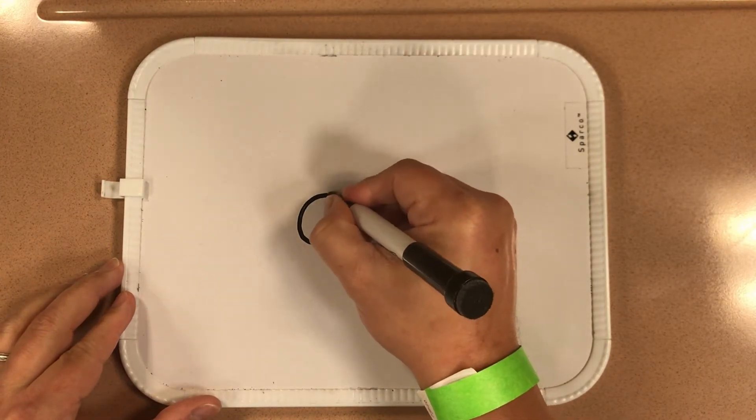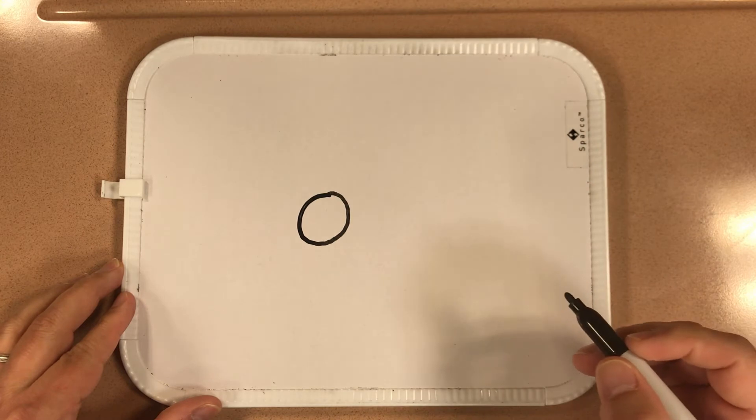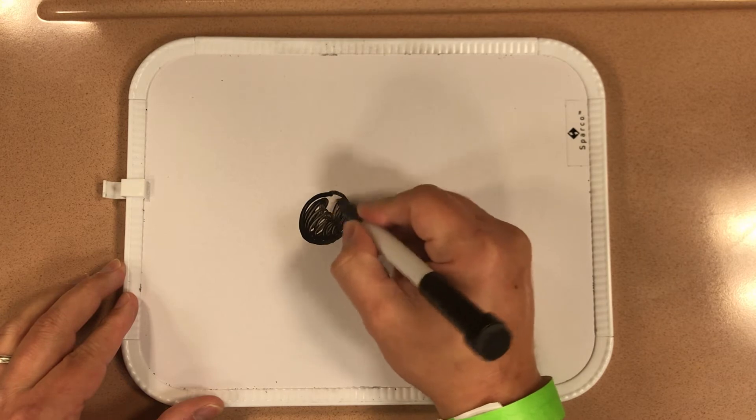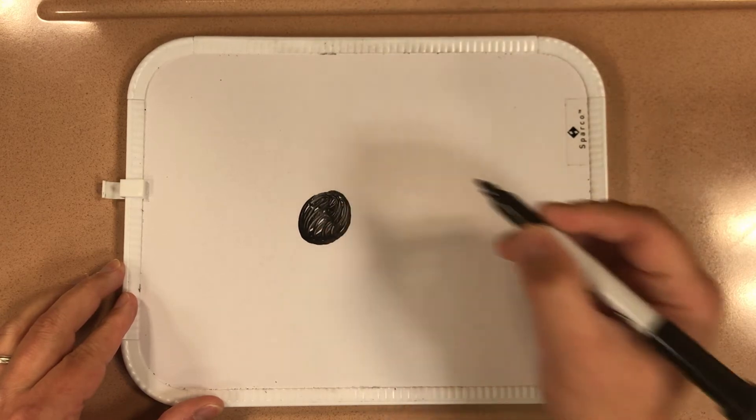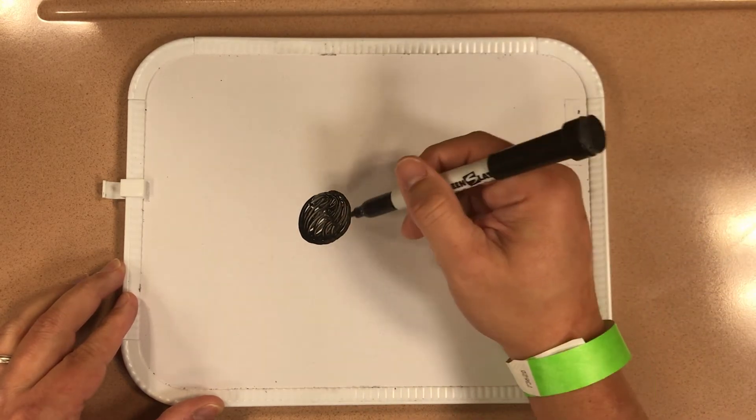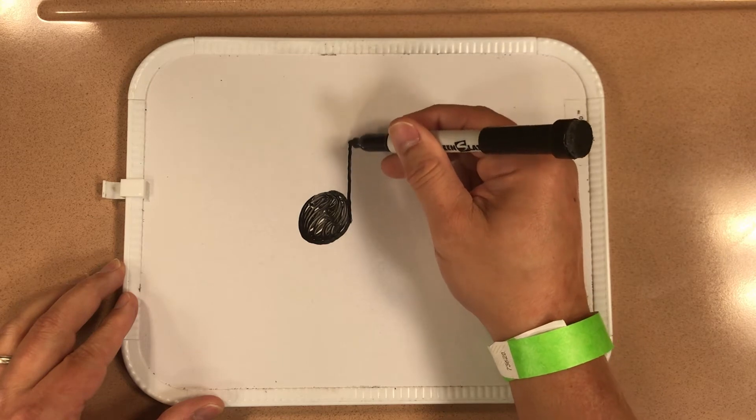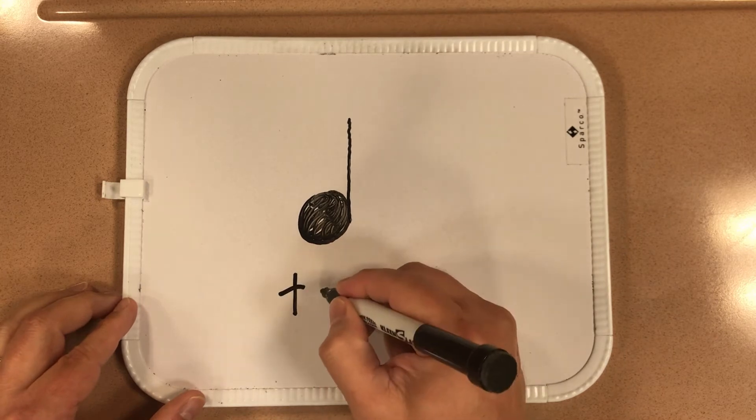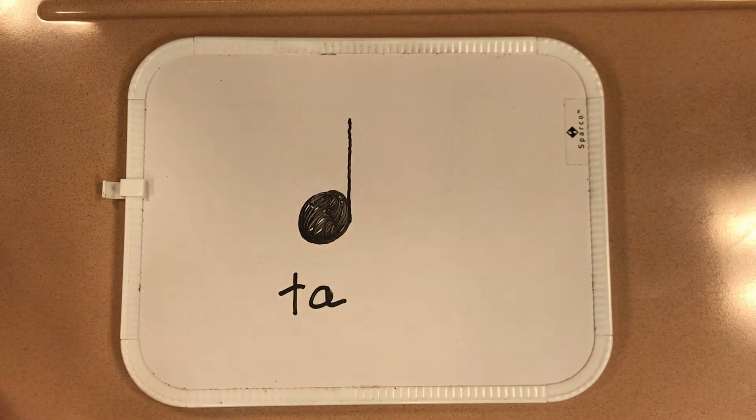start with a circle. And with the top, it's very important that we color in our circle just like this. Beautiful. And then the last step will be to add our stem, and there we have our top, just like that.